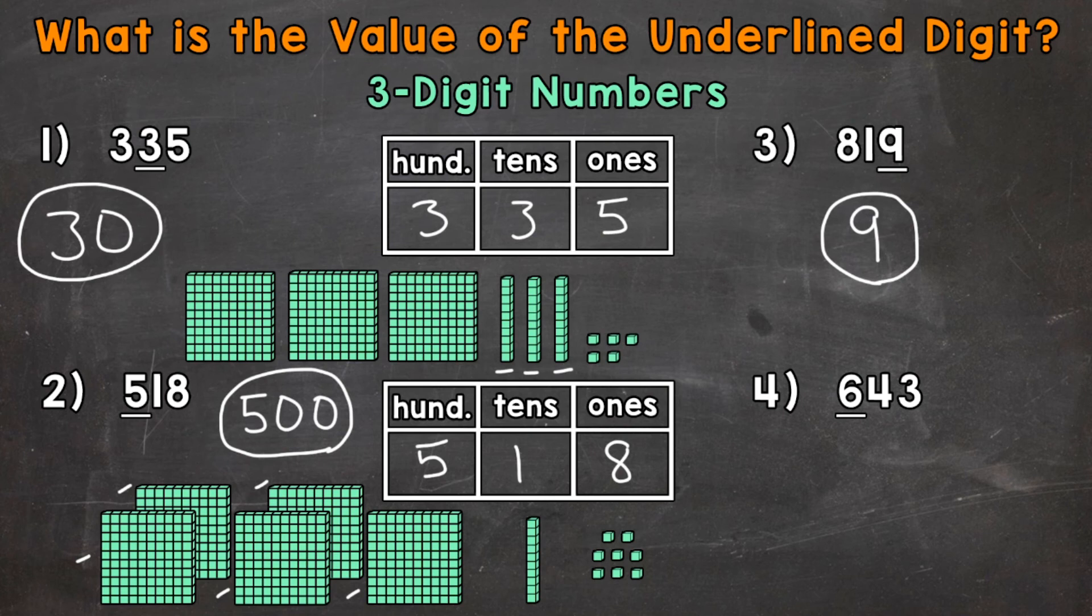That six represents six groups of 100 because, again, it's in the hundreds place. So the value or worth of that six is going to be 600.